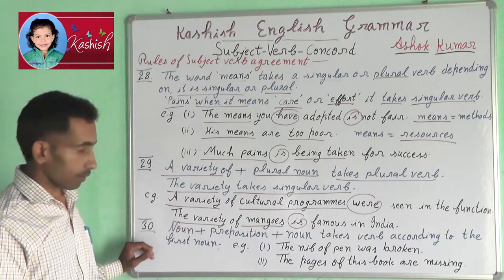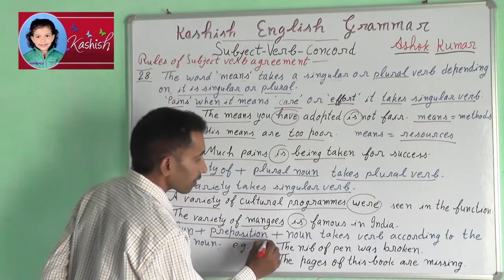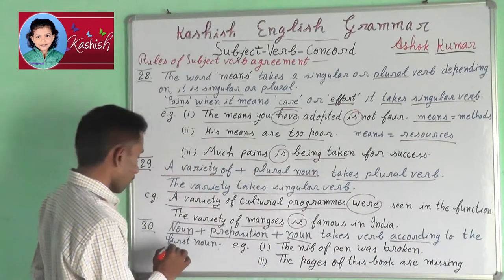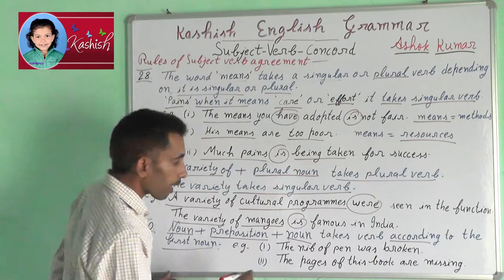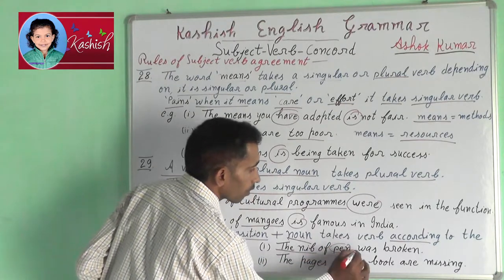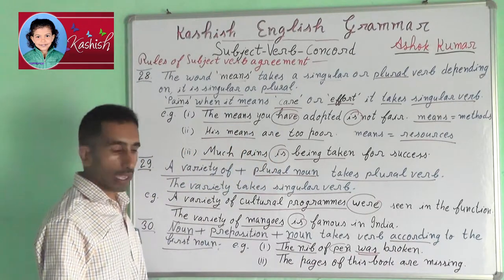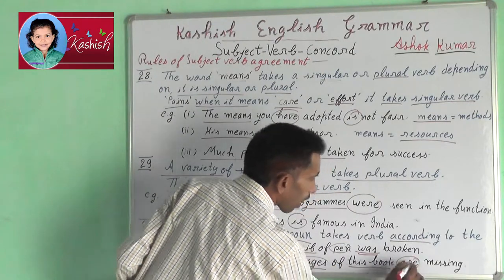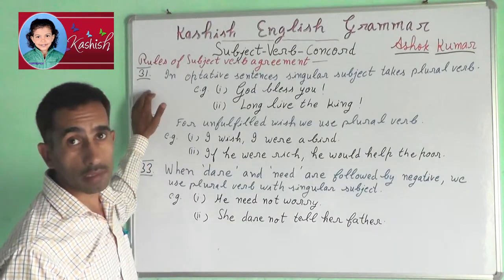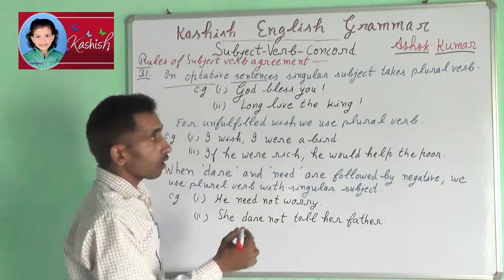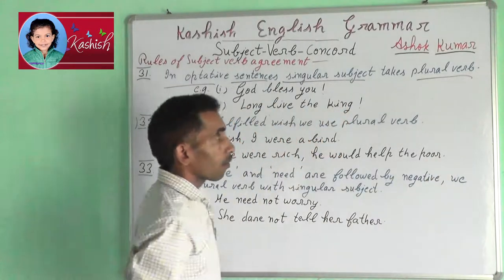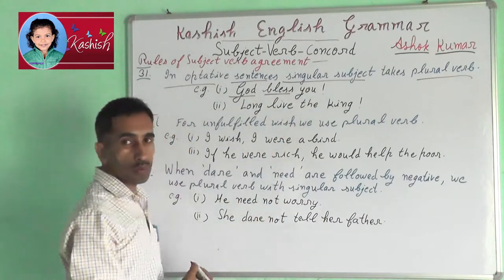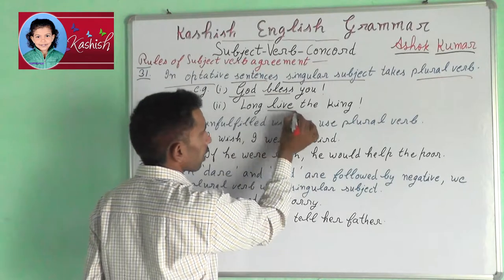Rule 30: Noun plus preposition plus noun. Rule 31: The verb agrees according to the first noun. For example: the nib of the pen was broken. The pages of this book are missing. Rule 31: In optative sentences, a singular subject takes a plural verb. For example: God bless you. Long live the king.